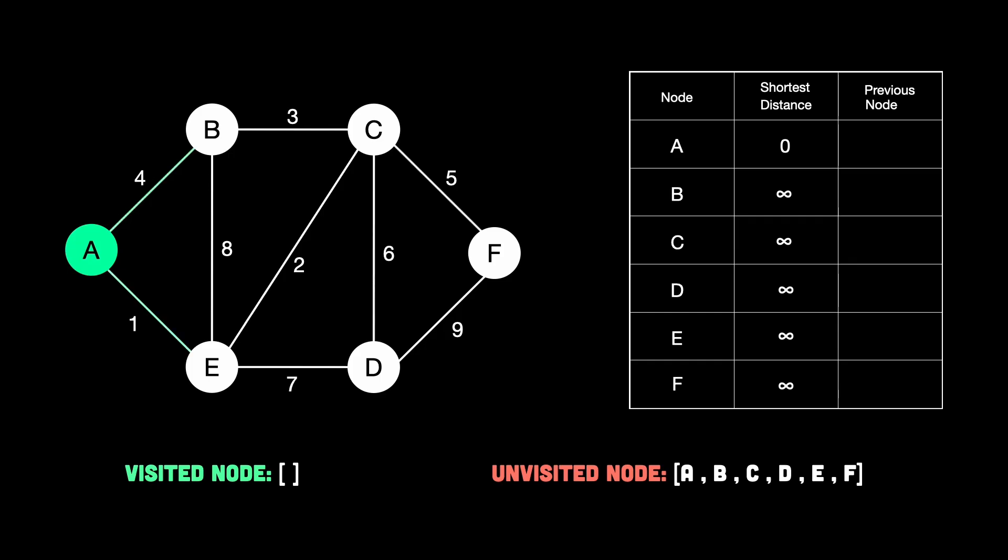According to the graph, the neighbors are B and E. The cost of going from A to B is 4. That means if I travel from A to B, the total distance is equal to 0, which is A's distance, plus 4, which is equal to 4. Now, that's better than infinity. So we update the shortest distance to reach B to 4. And we note in our table that B's previous node is A.